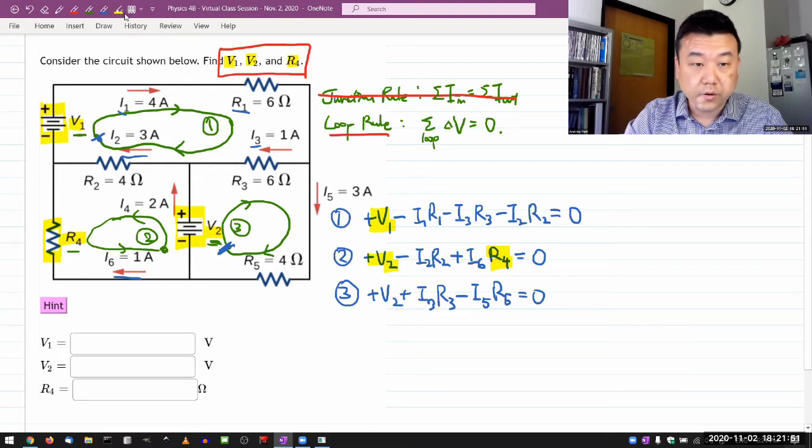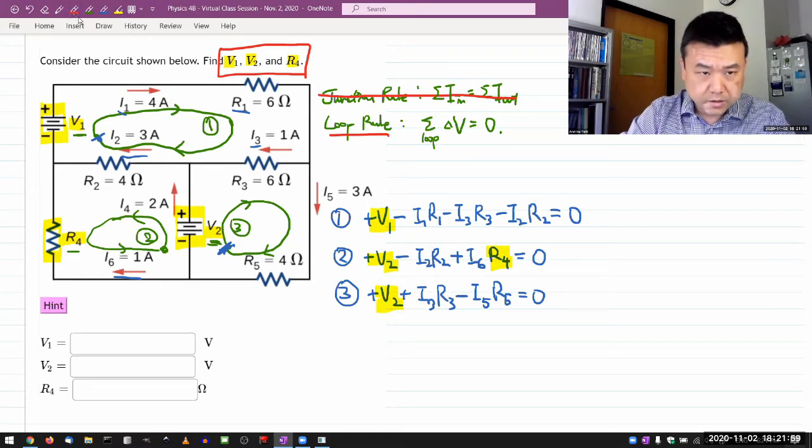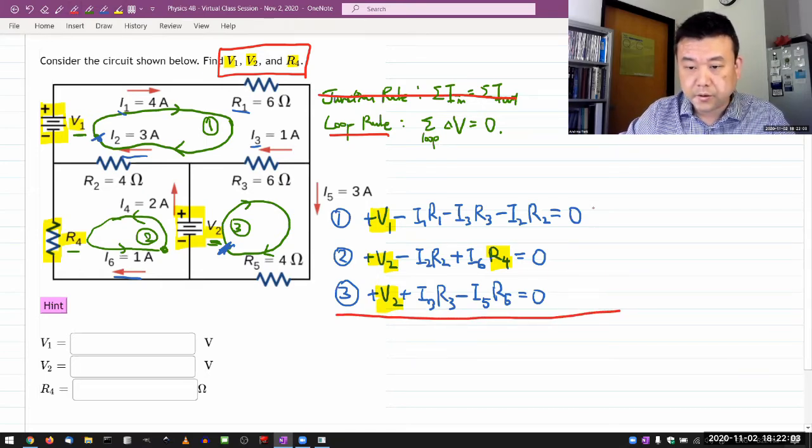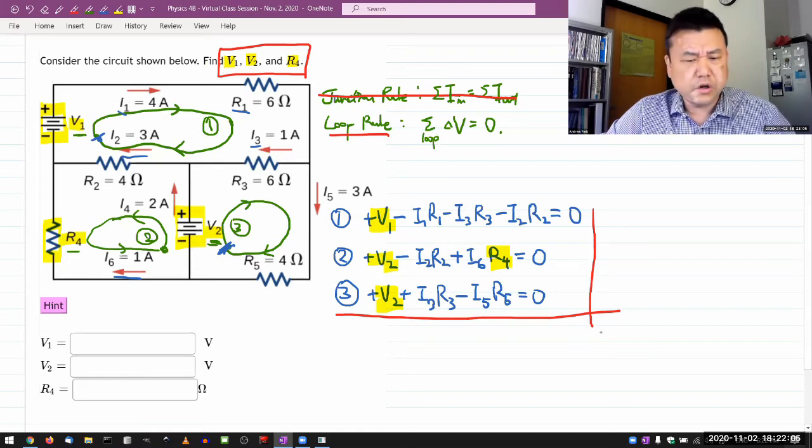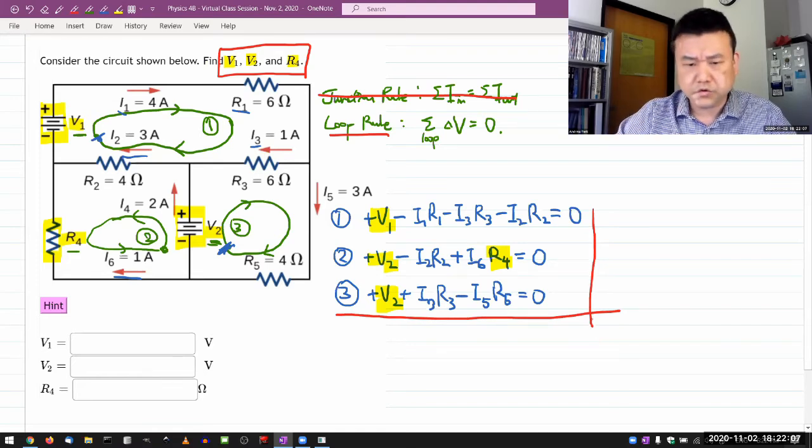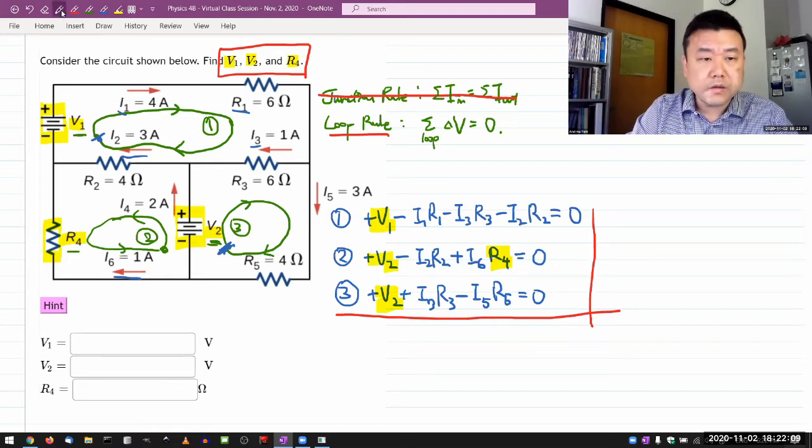Starting from this point here, as I go across V2 from the negative to positive terminal, I get voltage change plus V2. And I'm going against the current I3 as I go across R3. So it's going to be plus I3 R3. And as I go across resistor R5 in the same direction as current I5, it's going to be minus I5 R5. And that should add up to zero. I'm back to the starting point. And this is the equation where I only have V2 as the unknown. So I can solve for V2 here, plug that in equation two, and solve it.